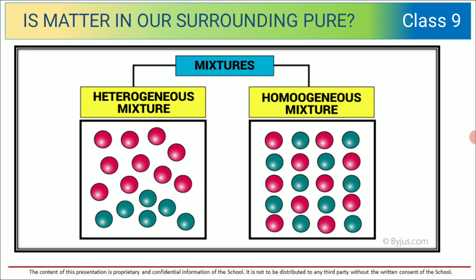You can see over here how the particle arrangement is shown. In heterogeneous mixtures, the two types of particles are not mixed properly — they are not stable. But in case of homogeneous mixture, they are stable and evenly distributed.